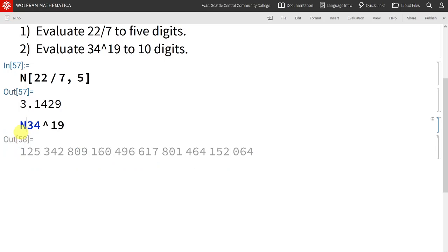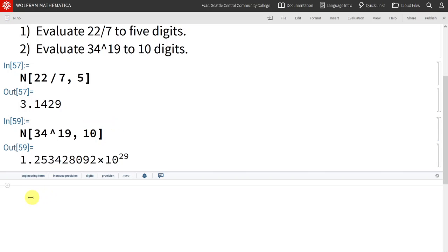So, we do N, comma, 10. Shift enter, and Mathematica gives us our result in scientific notation, with 10 digits.